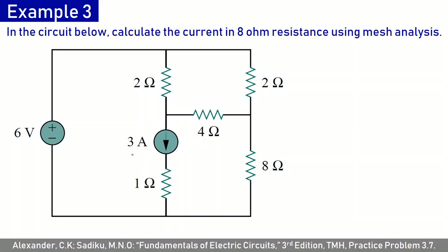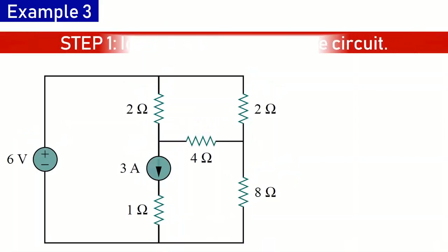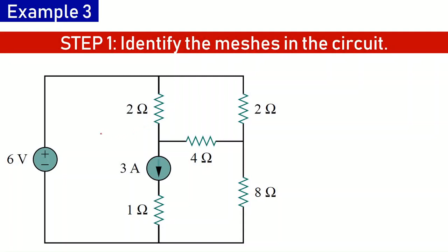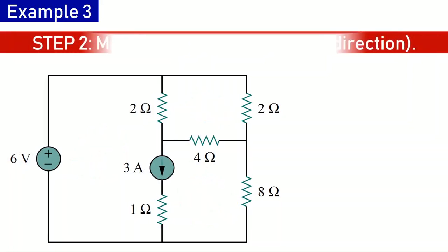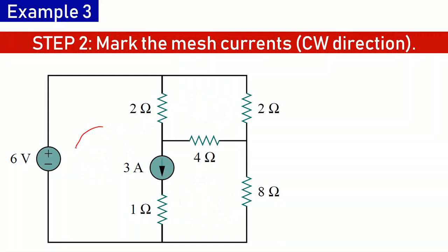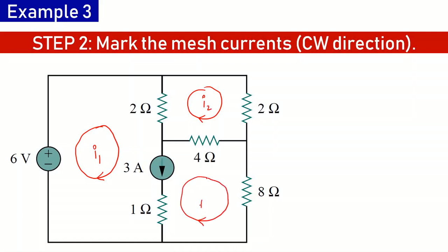As the final example, we have a circuit with a current source, and we are required to calculate the current through the 8-ohm resistance. First, identify all meshes — there are three meshes, marked with circles: mesh 1, mesh 2, and mesh 3. Then mark all mesh currents in clockwise direction: i1 for mesh 1, i2 for mesh 2, and i3 for mesh 3.